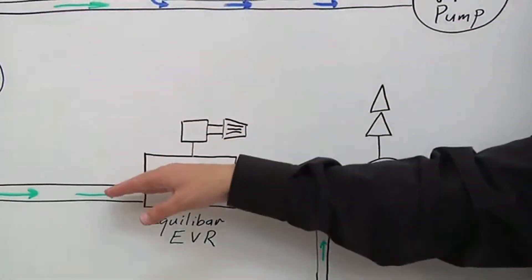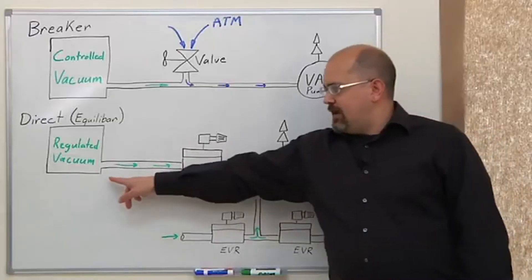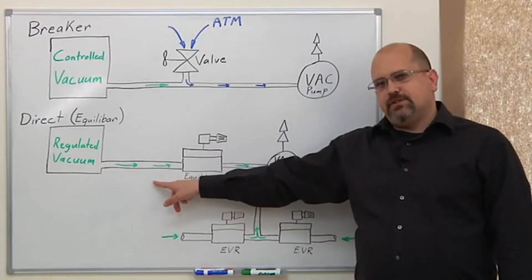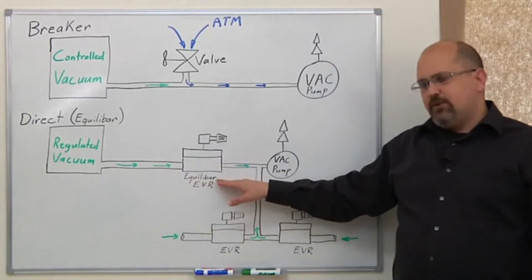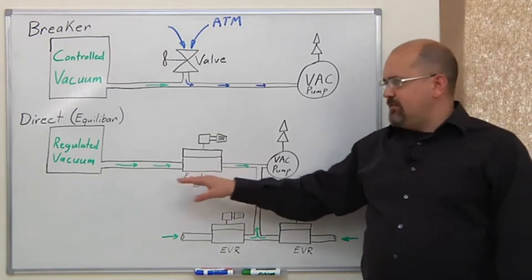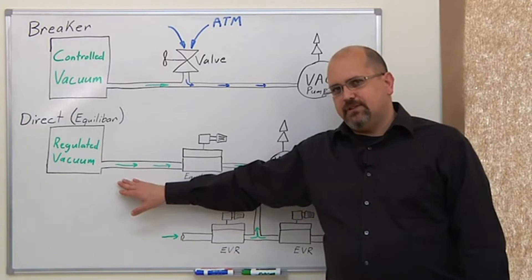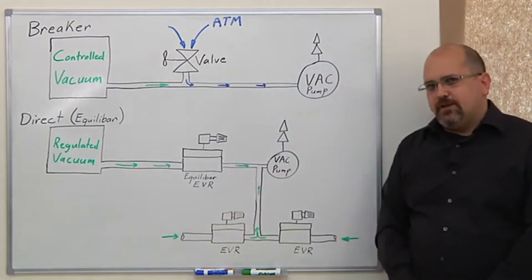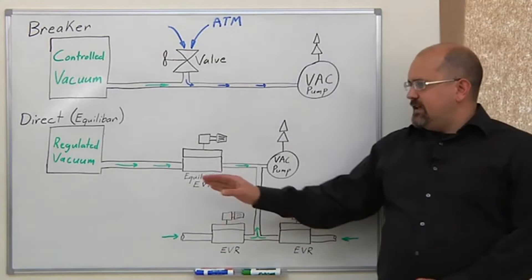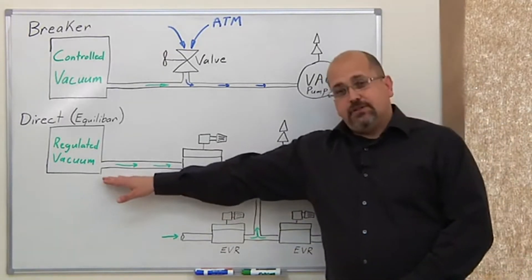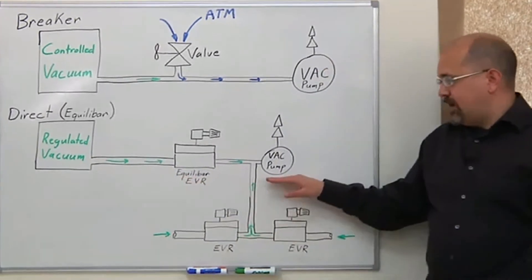No atmospheric air is allowed into the system, but the amount of air that is drawn out of the vacuum system is adjusted by the Equilibar regulator and limited to just the amount of flow that is required to maintain the vacuum in the system. One advantage of direct vacuum control is that the system pressure is independent of the vacuum pump.